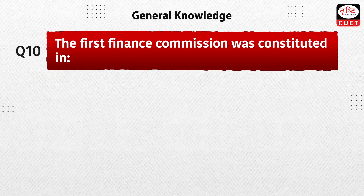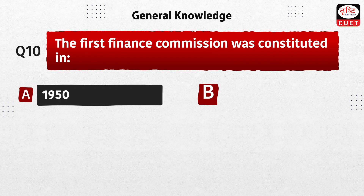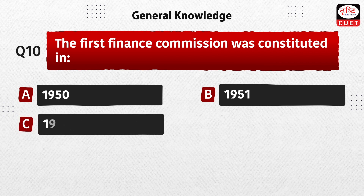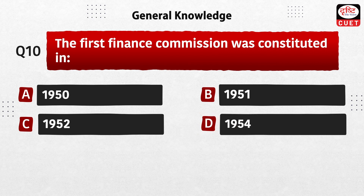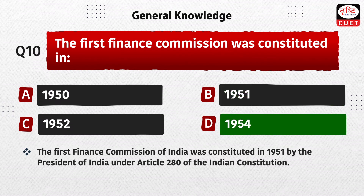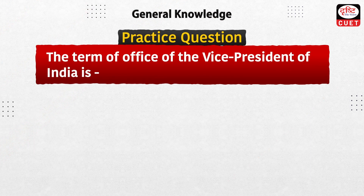Last question: the first Finance Commission was constituted in — 1950, 1951, 1952, or 1954? The correct answer is option B, 1951. The first Finance Commission of India was constituted in 1951 by the President of India under Article 280 of the Indian Constitution.